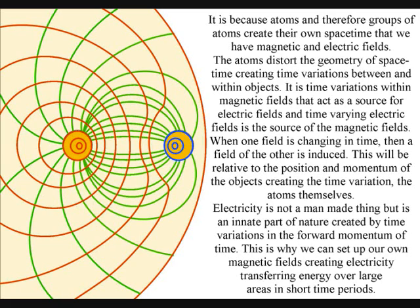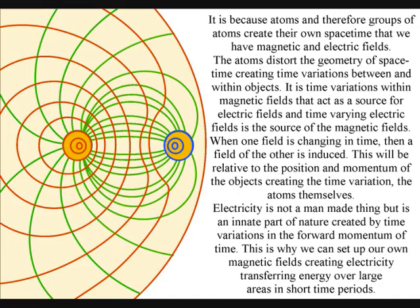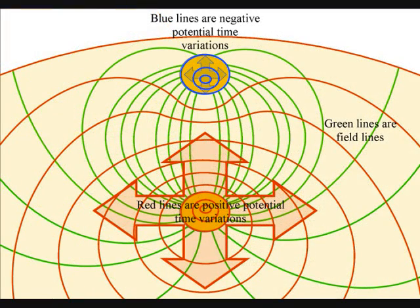When the atoms come together under their own gravity, their space-time will synchronize, distorting the geometry of space-time, creating time variations between and within objects. It is time variations within magnetic fields that act as a source for electric fields, and time varying electric fields is the source of the magnetic fields.